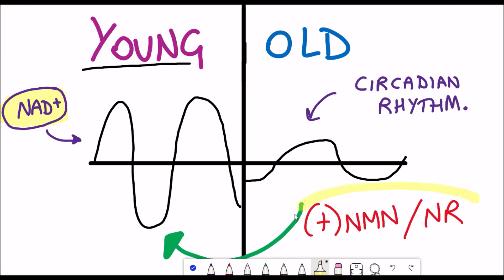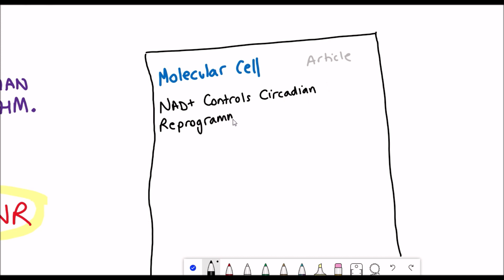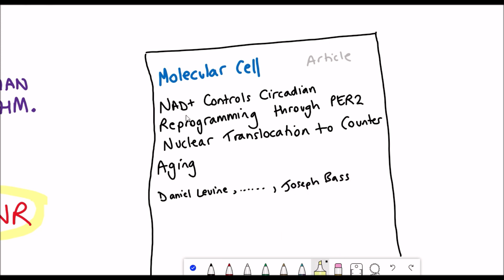Most of this work comes from a recent paper that used NMN and NR as supplements for NAD+. This paper was published in Molecular Cell just this week, and it's called NAD+ controls circadian reprogramming through PER2 nuclear translocation to counter ageing. We'll try and break this paper down, introduce what they did and what their results were, but firstly we need to talk about what NAD+ is and the circadian rhythm.